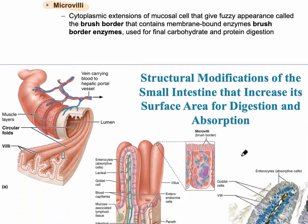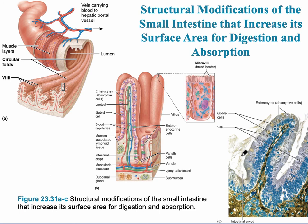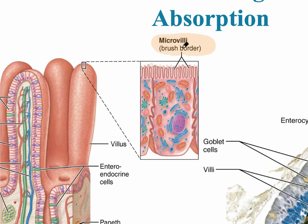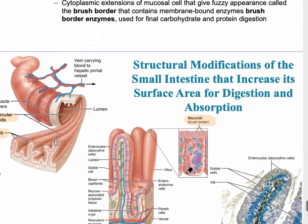The next slide shows how these three structural modifications look anatomically. We first see the circular folds, also called plicae circulares. The individual finger-like projections are called villi, and on each individual villus are additional cells called microvilli. This is sometimes described as the brush border because it looks histologically almost like brush strokes. The image to the right shows a microscopic image of a villus.